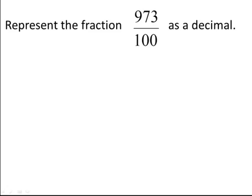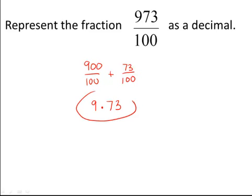We can also write this fraction as 900 over 100 plus 73 over 100. 900 divided by 100 is 9, and 73 hundredths we can write as 0.73. So the answer to our problem is 9.73.